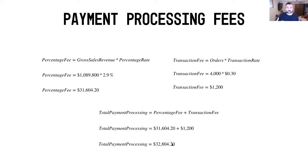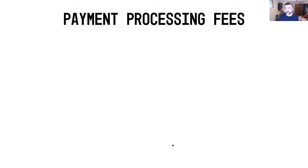So that, in a nutshell, is how you calculate your payment processing fees on both sides of the equation — the percentage fee side using gross revenue and your percentage rate, and the transaction fee side using orders times your transaction rate. Now let's look at a scenario where maybe that percentage fee isn't 2.9% — maybe there's a way to get it a little bit lower. There are definitely opportunities there, so we're going to look at a couple of scenarios on how you may be able to whittle down that percentage rate.